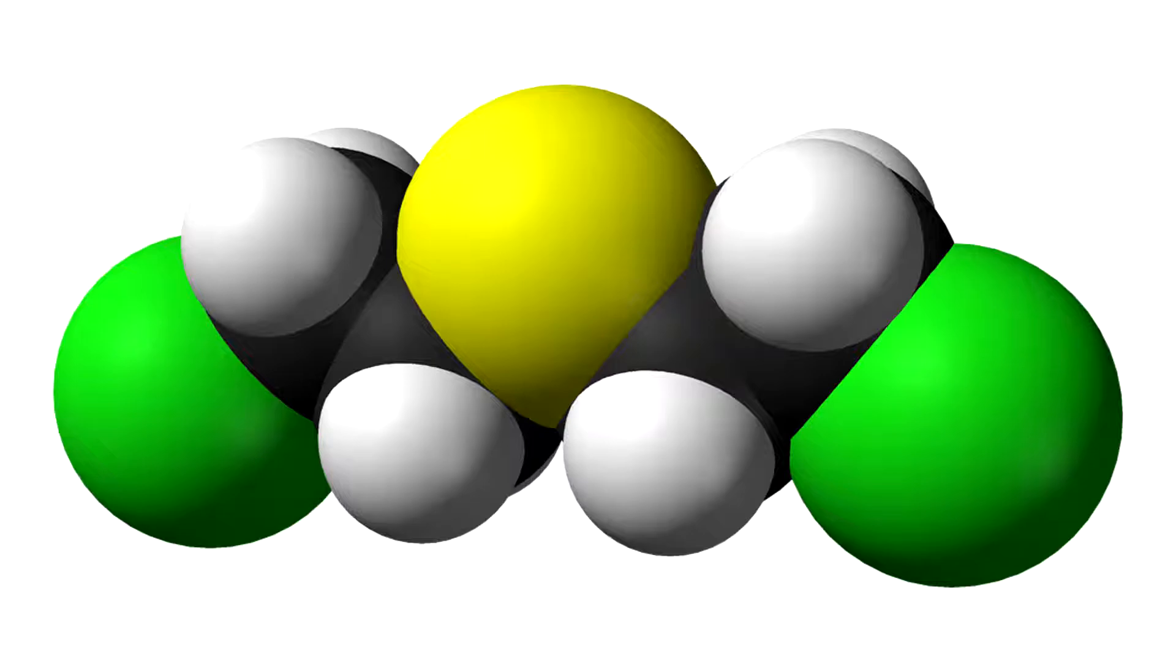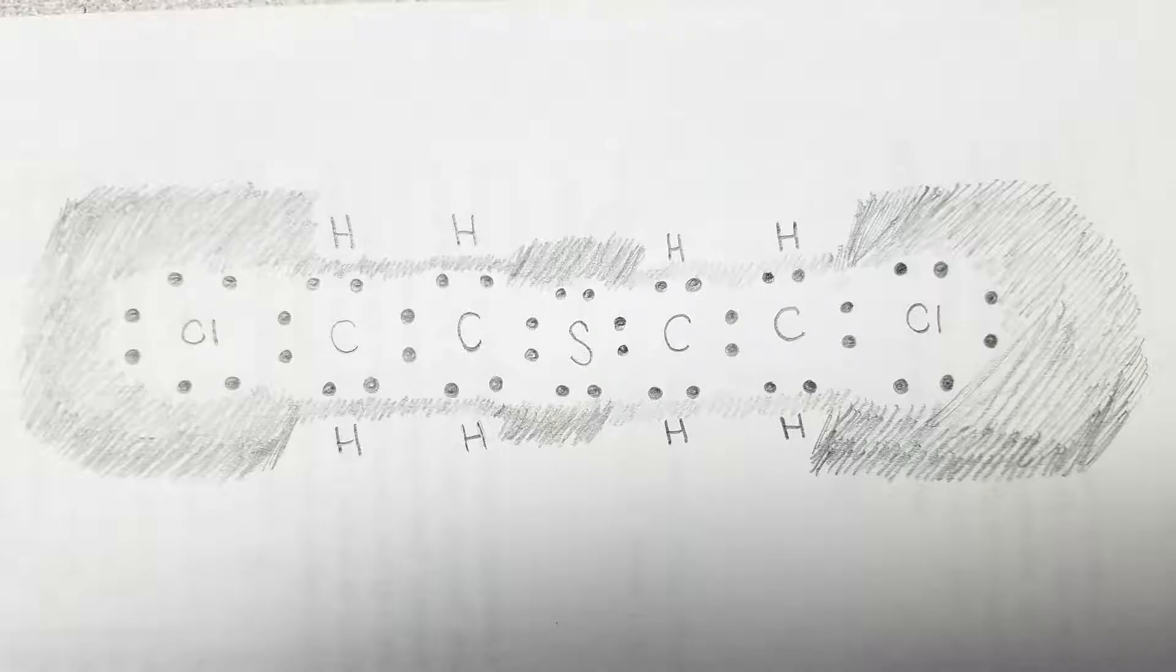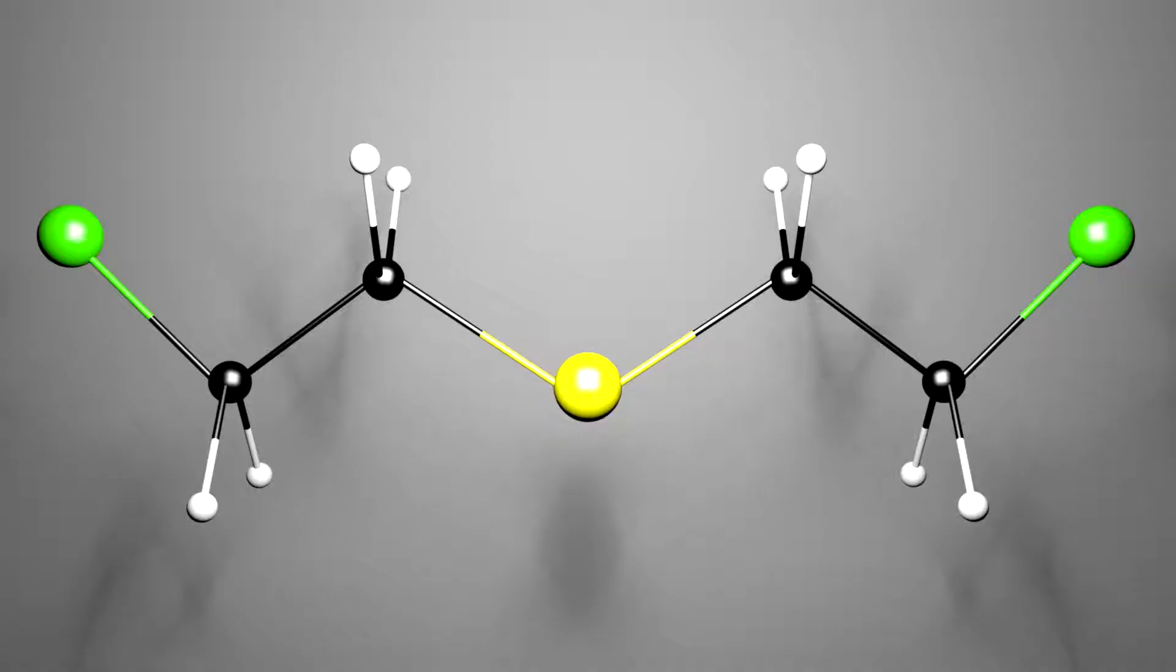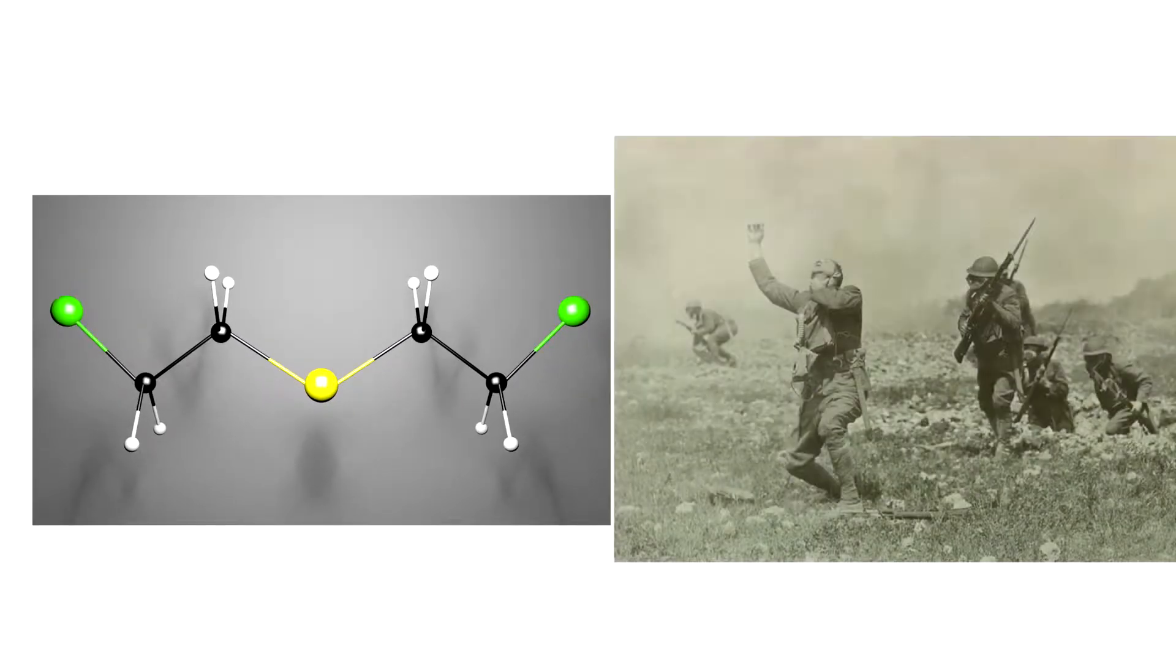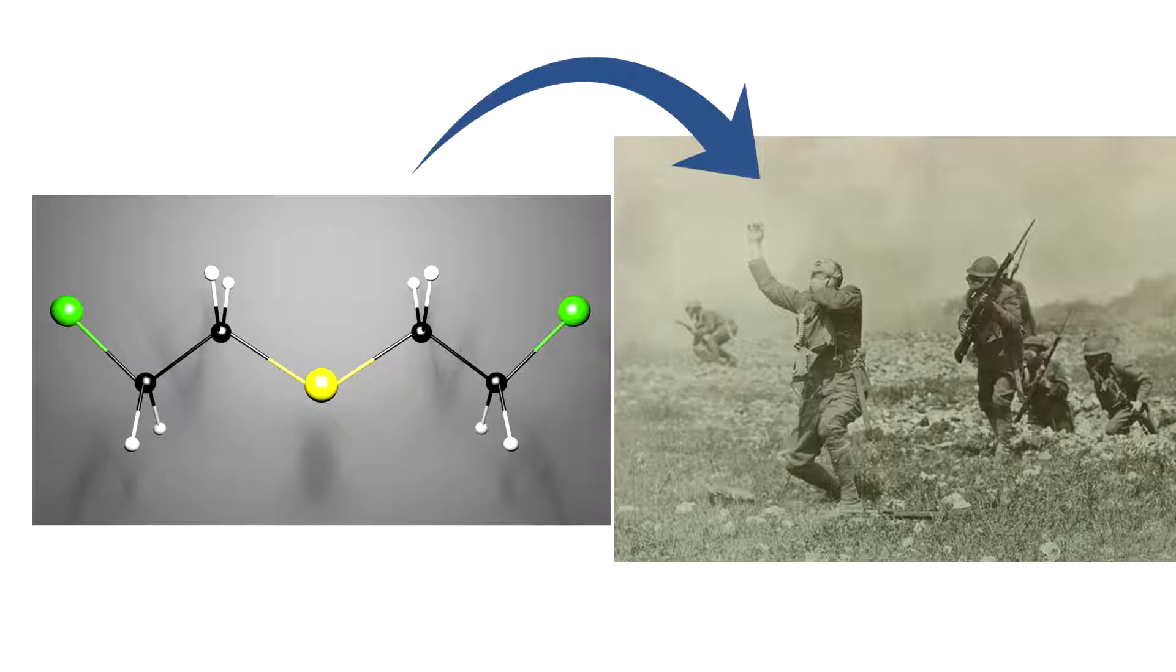We'll be looking at three different representations of it: a Lewis dot diagram, a skeletal structure, and a 3D model. Each shows a different aspect of our molecule that is fundamental to understand the structure-function relationship.